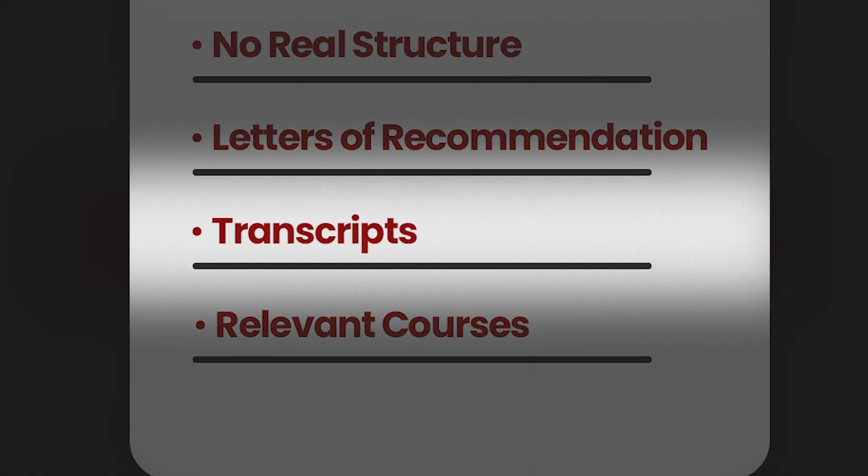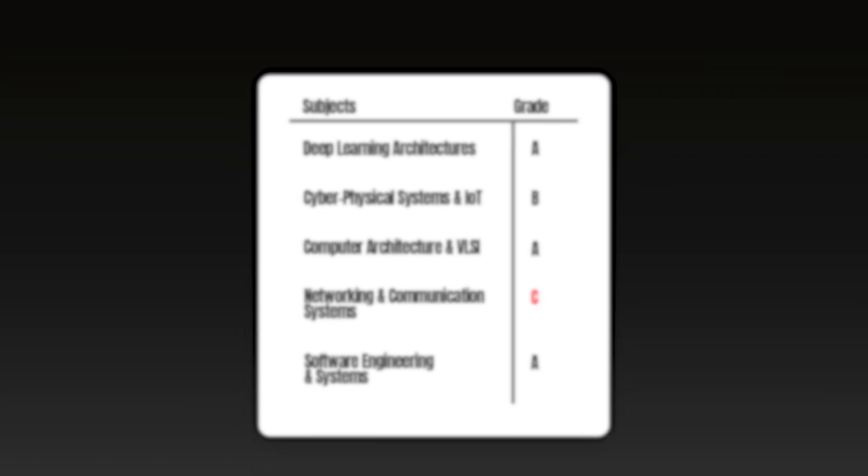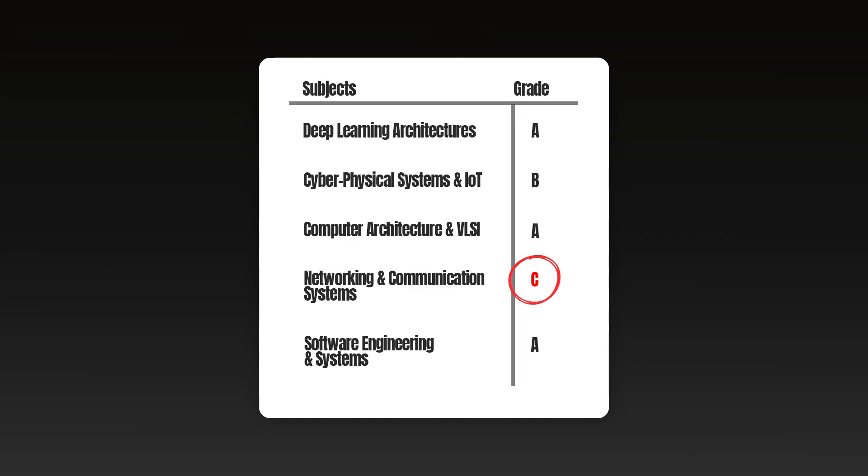Moving on to transcripts — what they will look for are low grades in courses relevant to your field. It's not completely imperative to have A's in every single course, but what will kibosh your application is a low grade in a relevant course for your discipline. All professors will look through line by line through your transcript and make sure you've got A's in the courses that are relevant. So if you've got a C or below in a relevant course, you're going to want to consider retaking that course. To be competitive for PhD programs, you have to ensure strong marks in relevant courses.